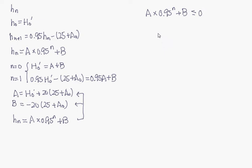0.95^n should be smaller or equal to minus B, and 0.95^n should be smaller or equal to minus B over A, because A is positive and we can take log.